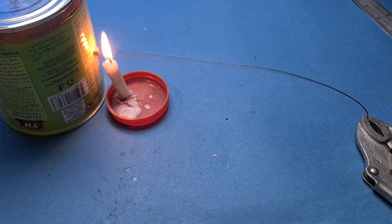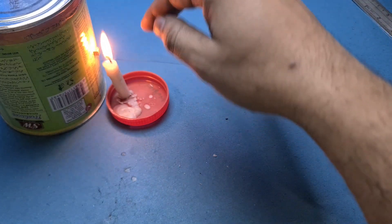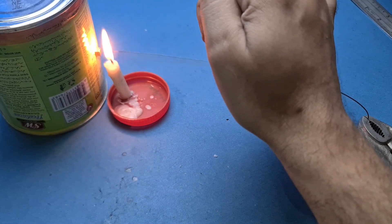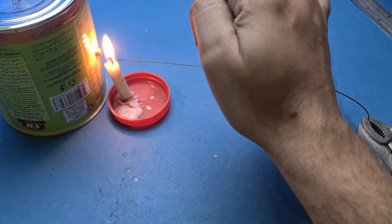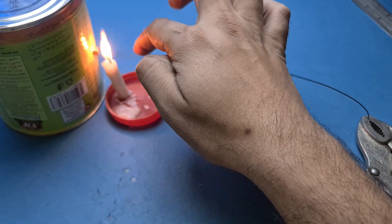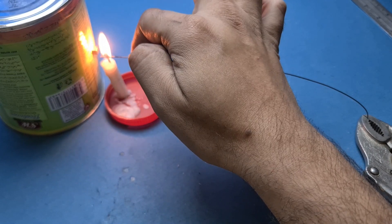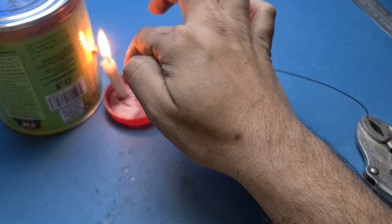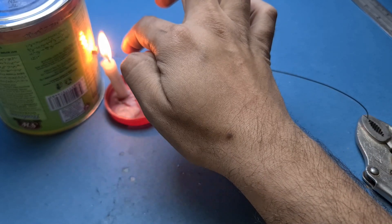But then it gets cold and the magnet attracts it again. This process keeps repeating, causing the wire to vibrate like this. You can see if I stop it, it starts to vibrate again, but it will stop as soon as I remove the candle.